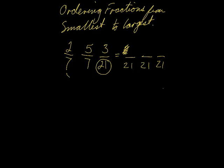What did I do to this 7 to make it 21? I multiplied it by 3. So that means I need to multiply the 2 by 3 as well, because we need to make sure we are creating equivalent fractions. So 2 times 3 is going to be 6.